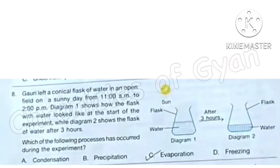Question 8: Gauri left a conical flask of water in an open field on a sunny day from 11am to 2pm. Diagram 1 shows how the flask with water looked like at the start of the experiment, while diagram 2 shows the flask of water after 3 hours. Which of the following processes has occurred during the experiment? So what do you think what might have happened? The liquid, that is water, was converted into gas and has been evaporated. It is called the process of evaporation, option C. So the solar energy drove away the water from the conical flask into the gaseous form.